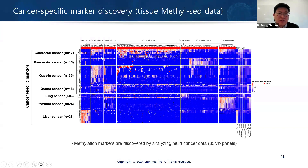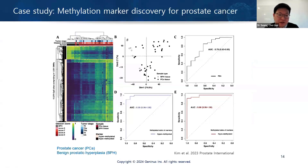In some cases, there are overlapping methylation markers between cancer types. To determine the true origin of the tumor, we find additional biomarkers to get cancer-specific methylation patterns.